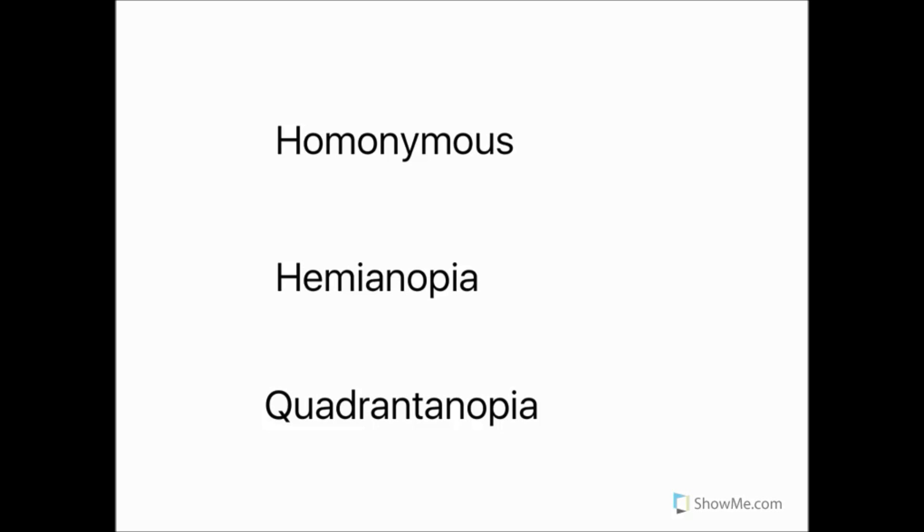So first of all we're going to go through the definitions that will help you to explain the effects of lesions in different aspects of the visual pathway. The first of these is homonymous. Homonymous simply means the same in both eyes.